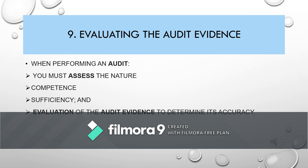Number nine is evaluating the audit evidence. Audit evidence is evidence obtained by auditors during a financial audit and recorded in the audit working papers. Auditors need audit evidence to see if a company has the correct information considering their financial transactions, so a CPA can confirm their financial statements. The audit evidence documents provide substantiation for the auditor's professional opinion. When performing an audit, you must assess the nature, competence, sufficiency, and valuation of the audit evidence to determine its accuracy. To be appropriate, audit evidence must be both relevant and reliable in providing support for the conclusions on which the auditor's opinion is based.